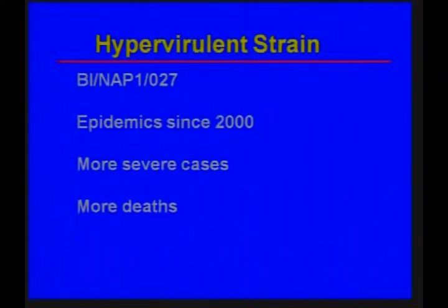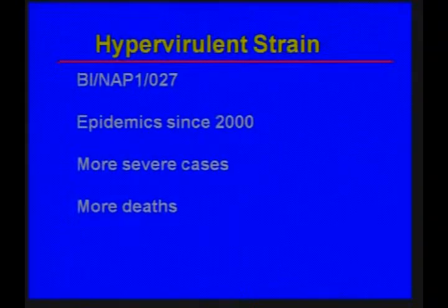We've seen a lot more C. diff since about the year 2000 because a hypervirulent strain developed. It has different names depending on the strain typing system used to characterize it: BI, NAP1, or O27, and has resulted in many more severe cases and many more deaths in the United States, Canada, Japan, and other countries of Europe.